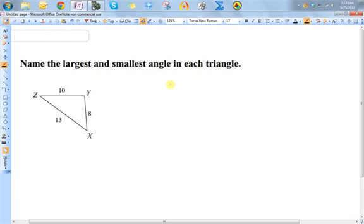If I want to find the largest and smallest angle of this triangle, it's actually not too difficult because I know the lengths of the sides of the triangle. The largest angle is always going to be across from the largest side, and the smallest angle is always going to be across from the smallest side.